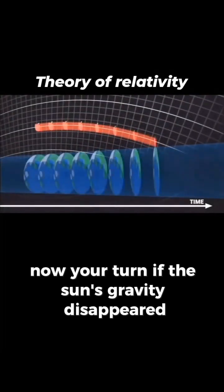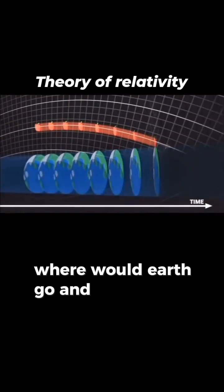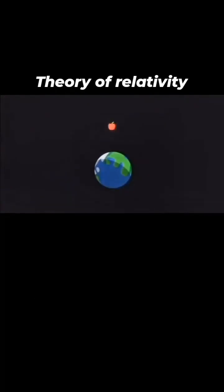Now your turn. If the sun's gravity disappeared, where would Earth go? And why does it move in a circle? Comment your answer.